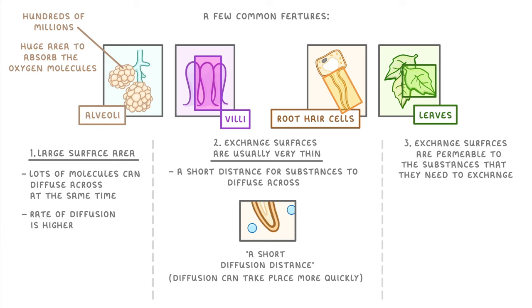A third point is that the exchange surfaces are permeable to the substances that they need to exchange. This just means that these surfaces allow the substances to diffuse across, rather than blocking them.